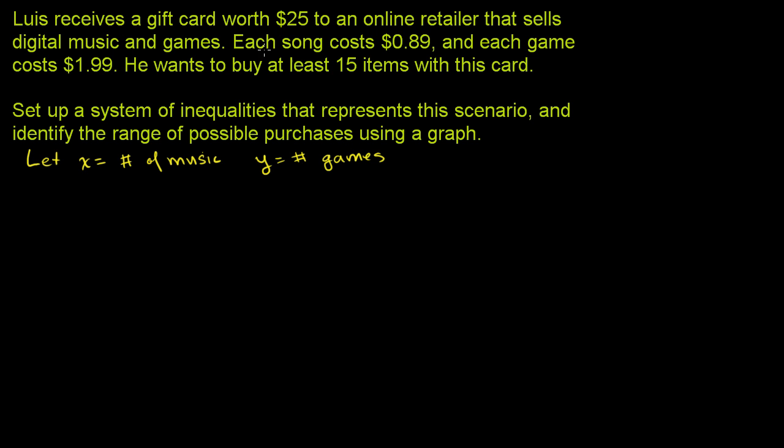We have the first constraint that the gift card is worth $25. So the total amount he spends on games and music combined can be no more than $25. He's going to spend $0.89 times the number of songs he buys on music, plus $1.99 times the number of games he buys. And that has to be less than or equal to 25. So 0.89x + 1.99y ≤ 25.